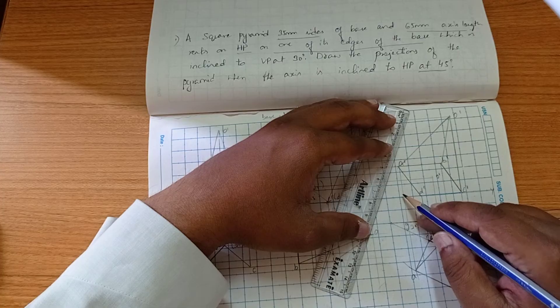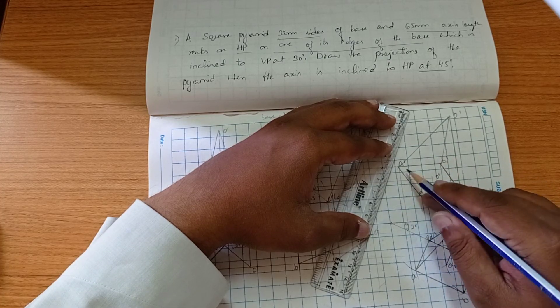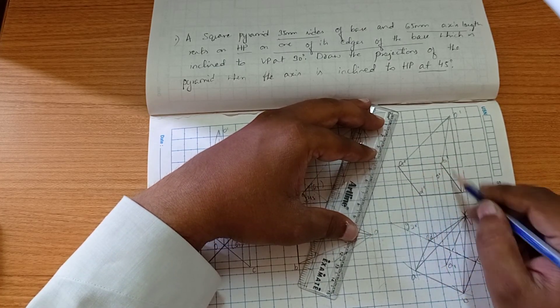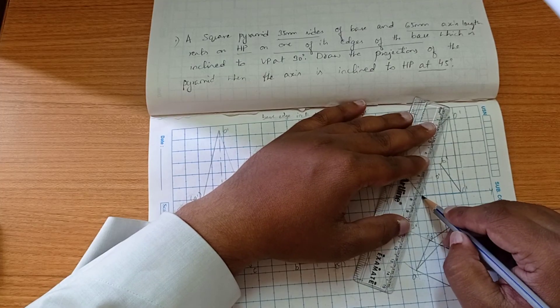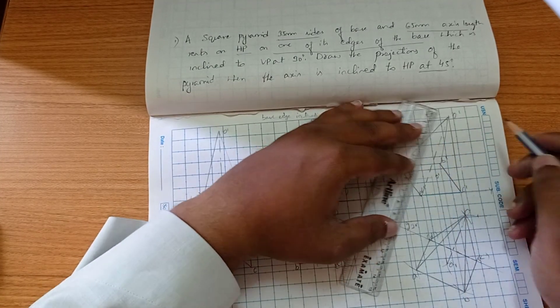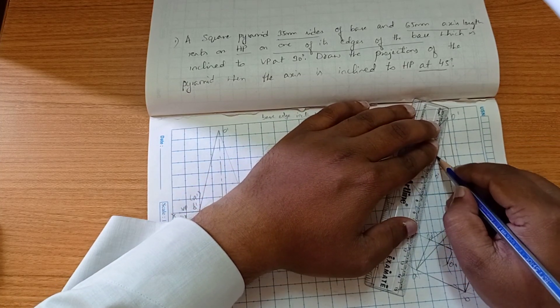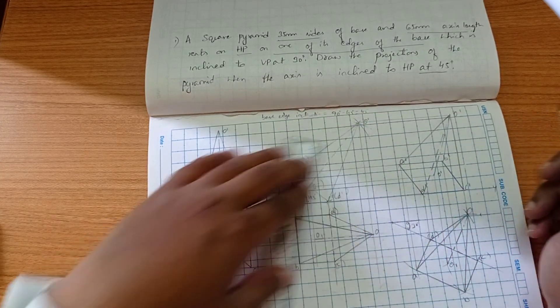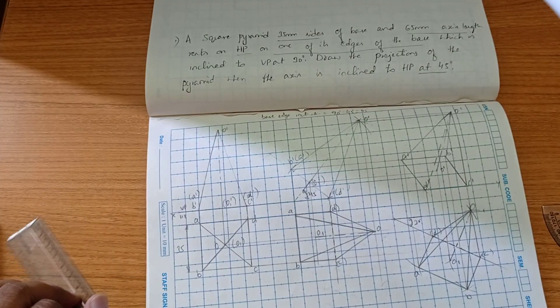The first slant ridge I am drawing from A dash to O dash, next from B dash to O dash, third from C dash to O dash. With respect to this base, if the slant ridge is passing inside of the square or the base, that will be a dashed line. Finally we have an axis. This is how we complete the problem.